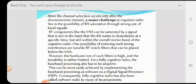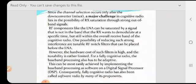Down converter makes a major challenge in cognitive radio lies in the possibility of receiver saturation through strong out of band signals. RF components like the LNA can be saturated by a signal that is not in the band that receiver wants to demodulate at a specific time, but still within the overall receive band of the cognitive radio. One possibility of reducing such strong interference are tunable RF notch filters.